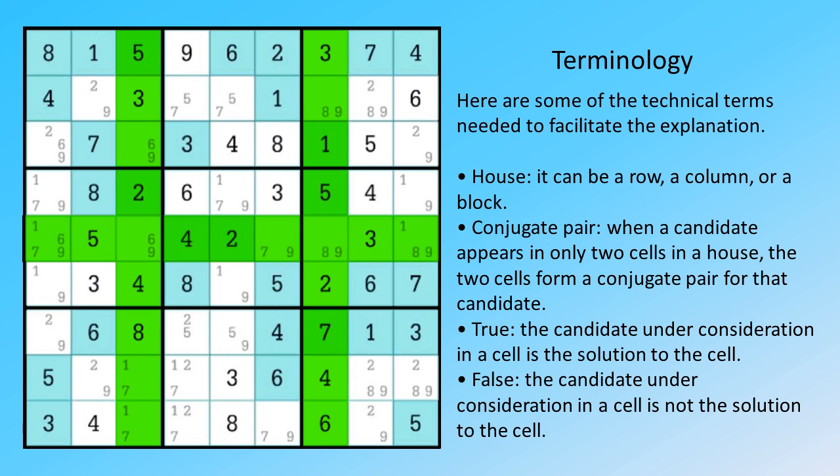Conjugate pair: when a candidate appears in only two cells in a house, the two cells form a conjugate pair for that candidate. True: the candidate under consideration in a cell is the solution to the cell. False: the candidate under consideration in a cell is not the solution to the cell.